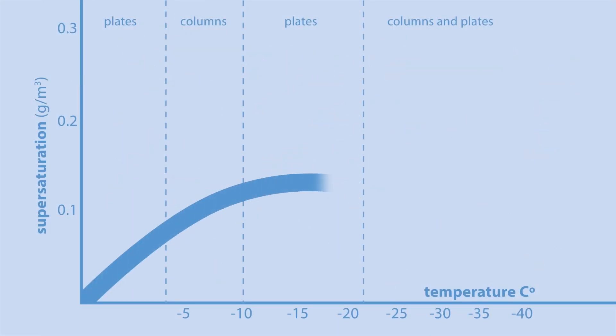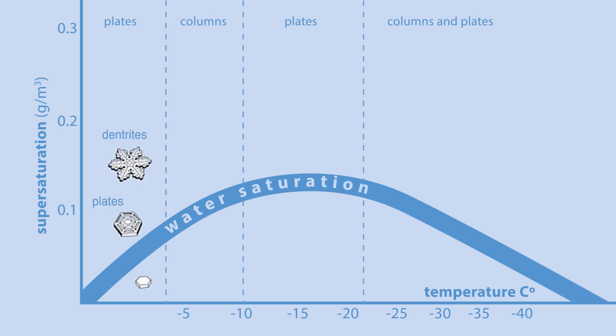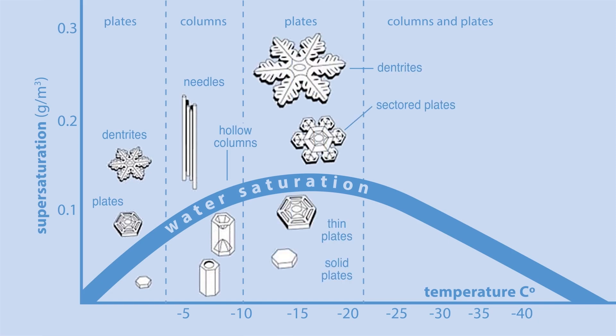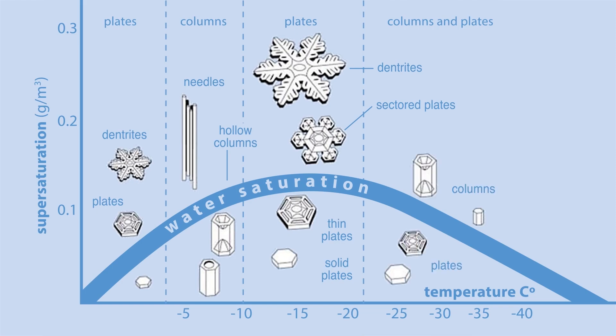Certain shapes are the result of specific temperatures. For example, long needle-like crystals form at 23 degrees, while very flat, plate-like crystals take shape at 5 degrees. Of course, temps fluctuate as the crystal falls, and that creates more unique shapes.